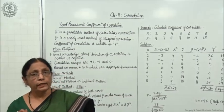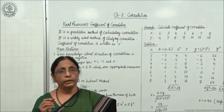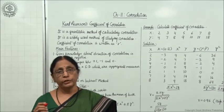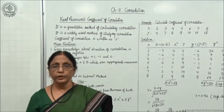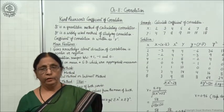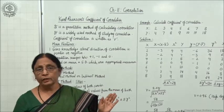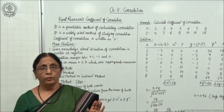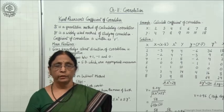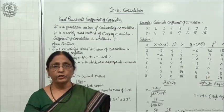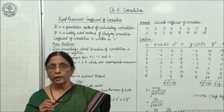Under scatter diagram, you know that we were getting the idea of correlation on the basis of their direction — that means whether positive or negative. But in this method of correlation, we get the quantitative measurement of correlation — that means exact measurement in quantity, or you can say in figures.